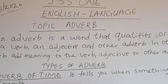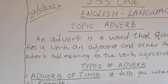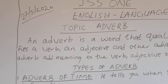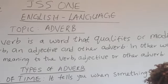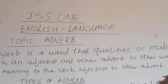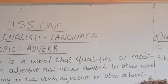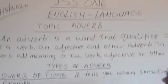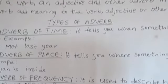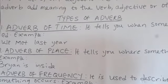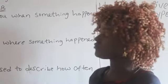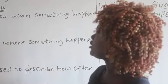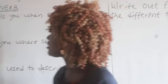What is an adverb? An adverb is a word that is used to qualify or modify a verb, an adjective, or other adverb. In other words, an adverb gives you more meaning — it adds meaning to the verb, the adjective, or other adverb. It gives you additional meaning to what is being said.